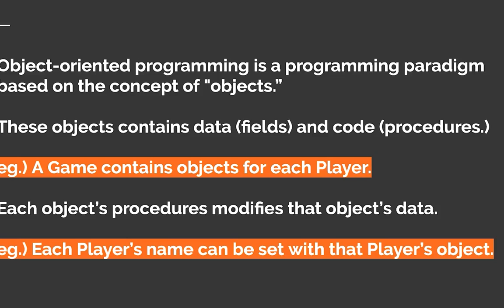Objects contain two things: data, which is known as fields, and code, which can also be known as procedures or functions. For example, you're building a game in Java. Because it's object-oriented programming, this game would contain objects — for example, objects for each player. Each object's procedures will modify that object's data.